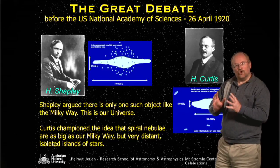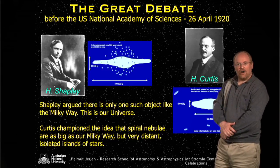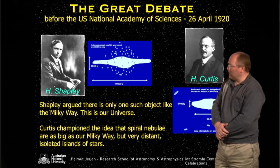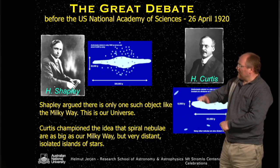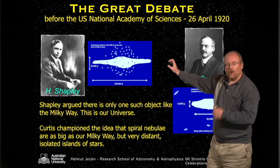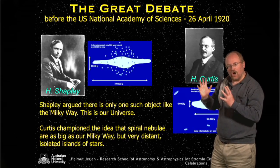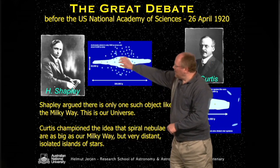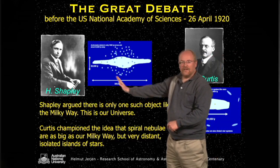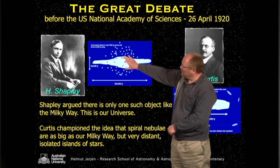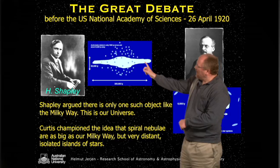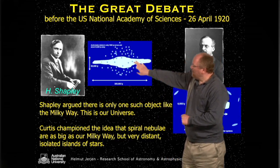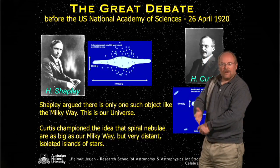Here are the two models discussed as part of this great debate. Shapley, the famous astronomer, argued that there is only one Milky Way out there — it's only one such large object, and this is essentially our universe. The Milky Way, seen from the side, is about 300,000 light years across and 30,000 light years thick, and all these spiral nebulae shown before are simply very close objects that belong to our Milky Way.